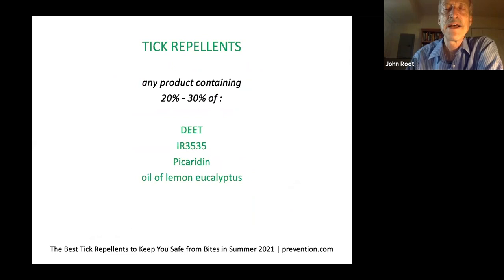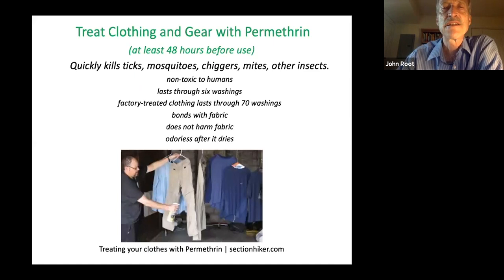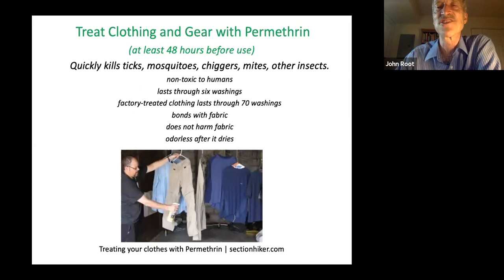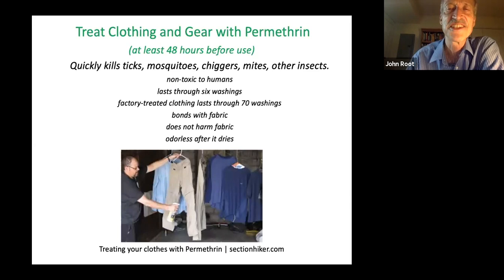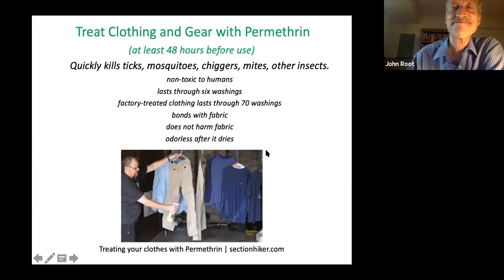You can buy repellents that have any of these four ingredients in them. You can also spray your clothing and gear with permethrin at least 48 hours before use. It not only repels — it actually kills ticks, mosquitoes, chiggers, mites, and other insects that come in contact with it. It'll last through six washings, and if you buy factory-treated clothing, that lasts through 70 washings.